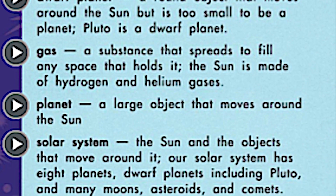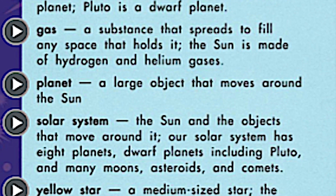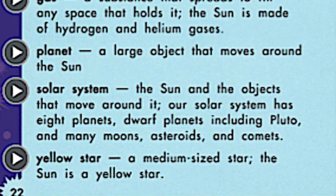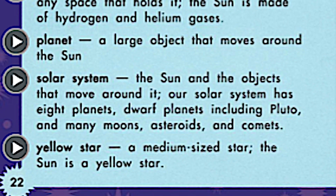The next word in our glossary is planet: a large object that moves around the sun. Our Earth is considered a planet because we move around the sun. The next word in our glossary is solar system. You learned about the solar system before — the sun and the objects that move around it. Our solar system has eight planets, dwarf planets including Pluto, and many moons, asteroids, and comets.